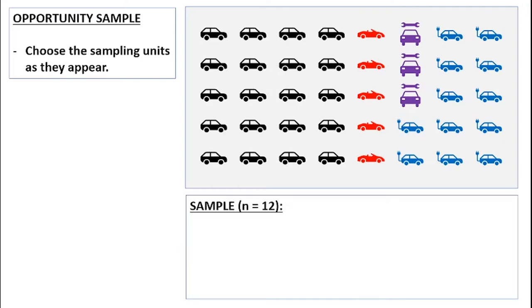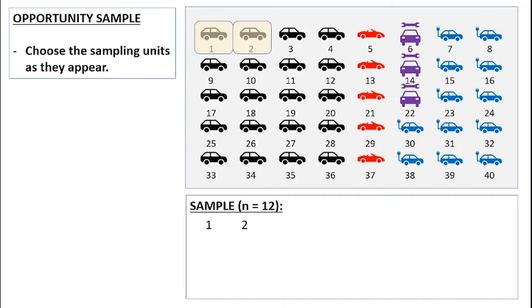So if we get back to this example about the cars in the car park, I'm just gonna choose them or choose to include them based on the ones that I walk past. So every car that I walk past, these first four black cars are all involved. Then I walk past a red, a purple, and two blues. I've included all of them.